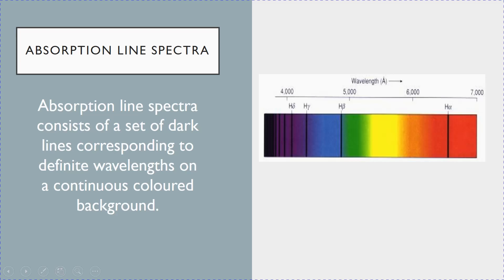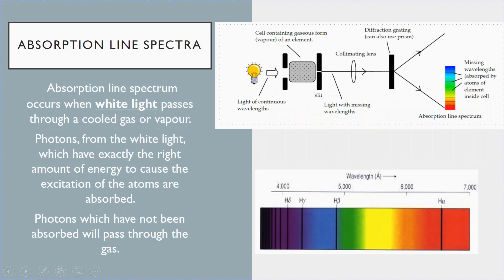How do you get absorption line spectra? The setup is slightly different. Instead of a discharge tube, you will use a normal bulb which contains white light — which means it contains a continuous range of wavelengths — and it is passed through a gas at low temperature, so that the atoms in this gas are at the ground state.